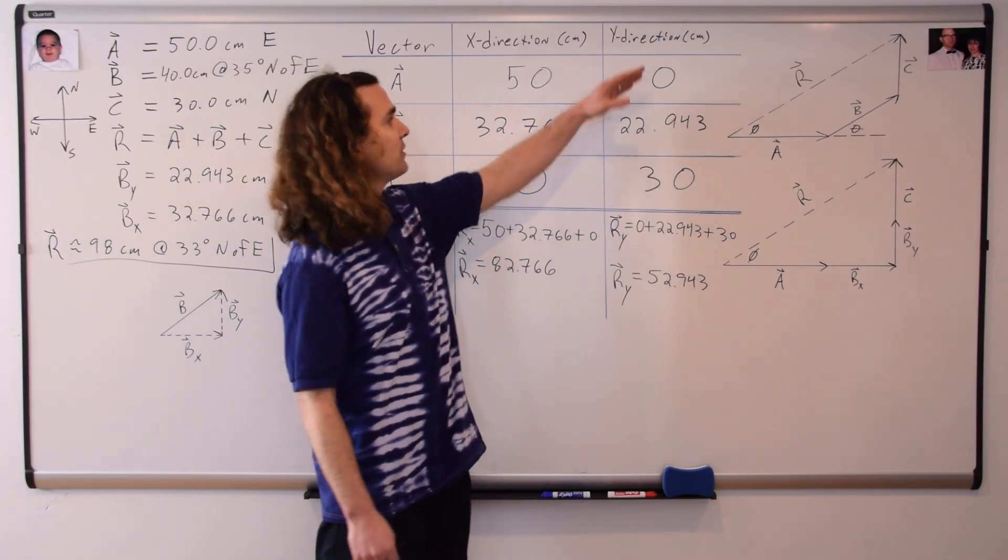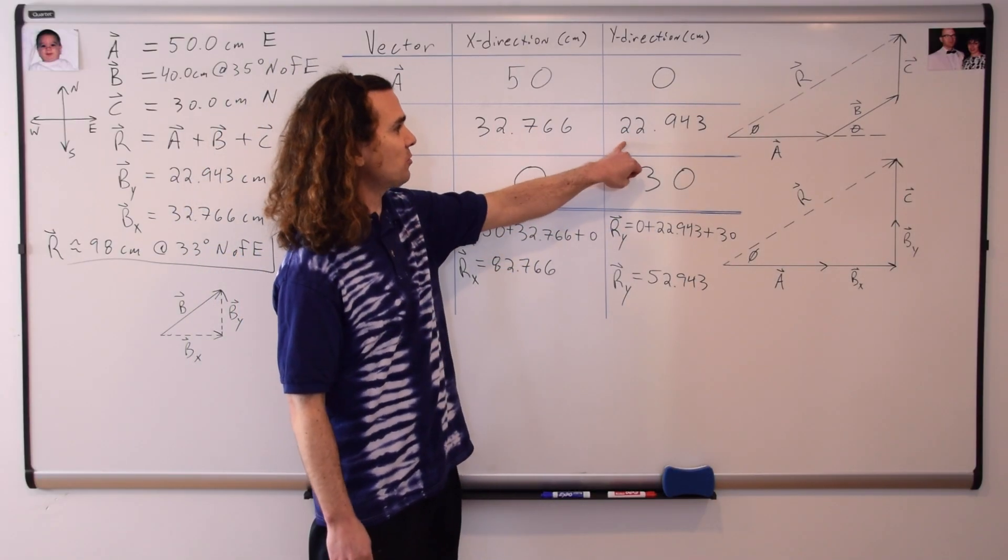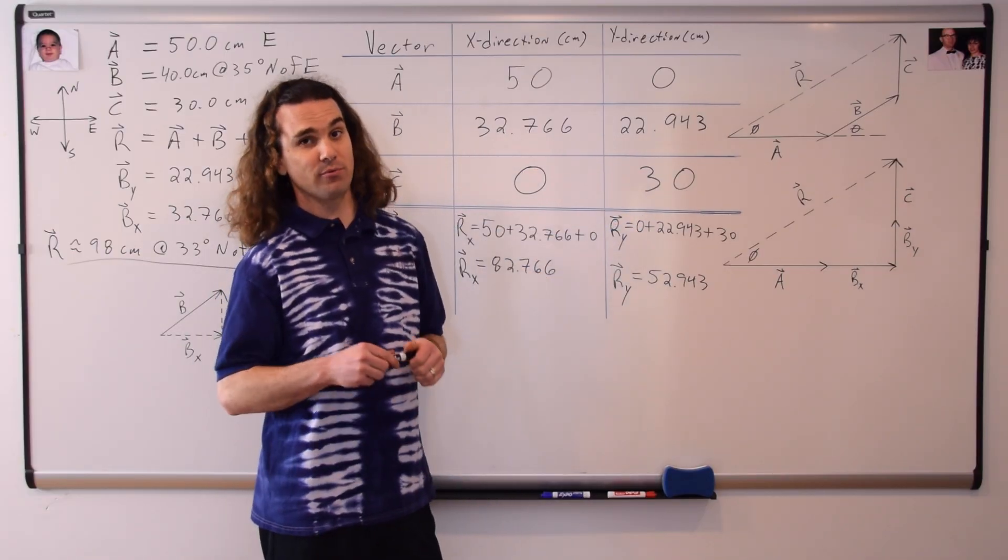And we can add all the components in the y-direction to figure out the resultant vector in the y-direction. 0 plus 22.943 plus 30 is 52.943 centimeters.